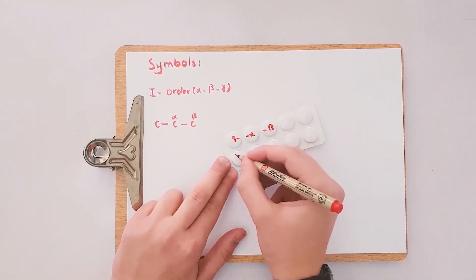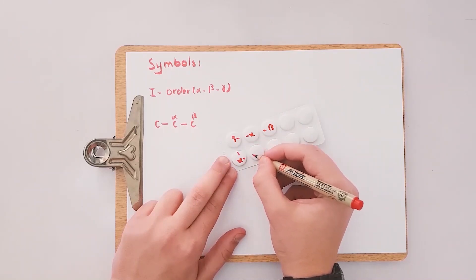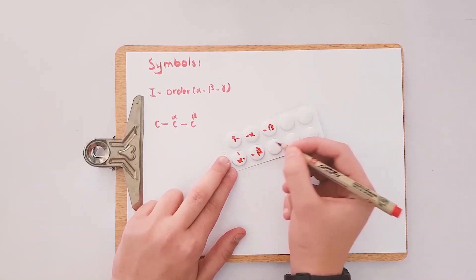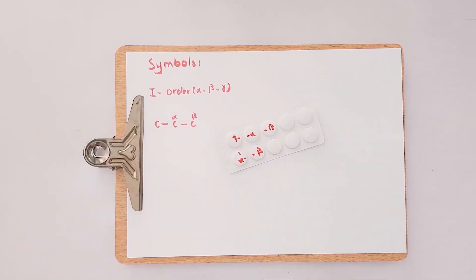But what about the one below the number one atom? It will be assigned as alpha and the next one will have a beta. In conclusion, the direction has no influence on the nomenclature and you can have two to three to four alpha atoms.